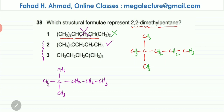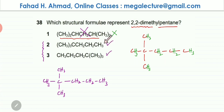For the third one, it is also correct. I'm not going to redraw the molecule because if you look carefully, this is just a flipped version of the second one: 3 CH3s followed by a carbon atom, then CH2, CH2, then CH3. So these two are exactly the same — one is just a flipped version of the other. Only option number one is incorrect, and options 2 and 3 are correct. Since 2 and 3 are correct, the option you're going to select is option C.